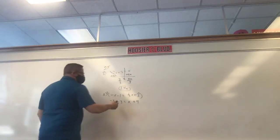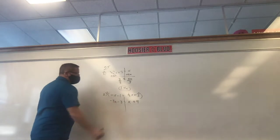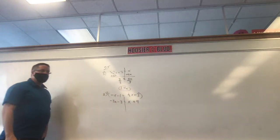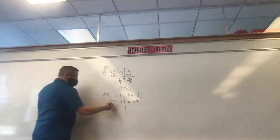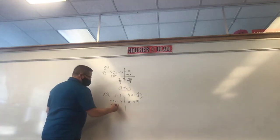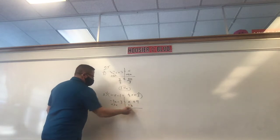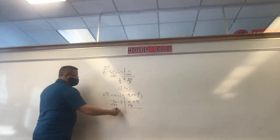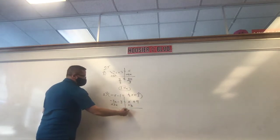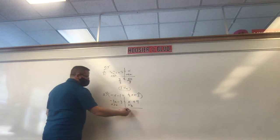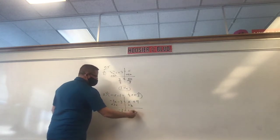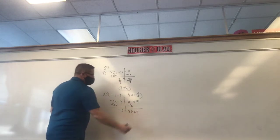Now what are we going to do? We have an x on each side, so get rid of the smaller one. Add 3x to each side. We have negative 3 equals 4x plus 9.